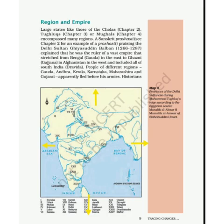Now, what is this column in light brown color? You can read that it says Map 3: Province of the Delhi Sultanate during Mahmud Tughluq's reign, according to the Egyptian source Masalik al-Absar fi Mamalik al-Amsar by Shahbuddin Umari. We found this source from the Egyptian source, and here we are talking about Map 3.